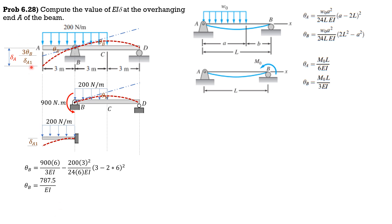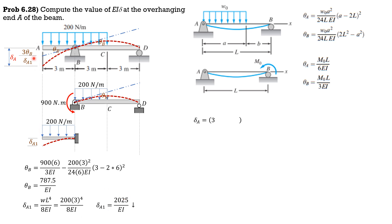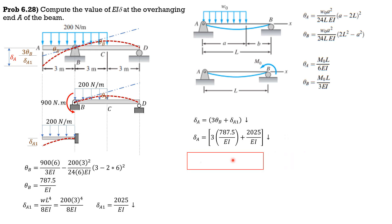So delta A1 equals 2025 over EI downward. Finally, delta A equals 3 × theta B plus delta A1, treating them as positive since the deflection is downward. Therefore delta A = 3 × (787.5/EI) + 2025/EI. Combining, delta A equals 4387.5 over EI N·m³ downward.